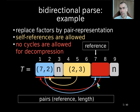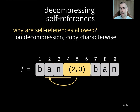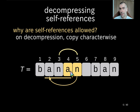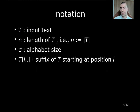But one may wonder why can we allow self-references? Well, during the decompression, we can decompress character-wise. Like in this situation, we can start decoding first the A, then the N, and then because we have already decoded the A, we can use it for writing it at position 6. It will follow that T is the input text, N is the text length, sigma is the alphabet size, and Ti is the suffix of T starting at position i.